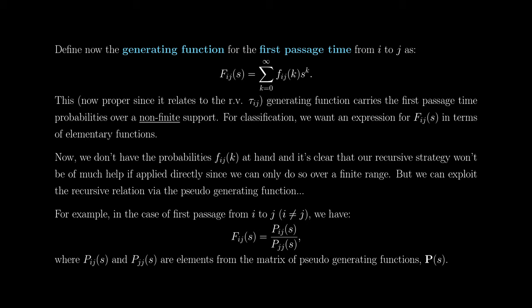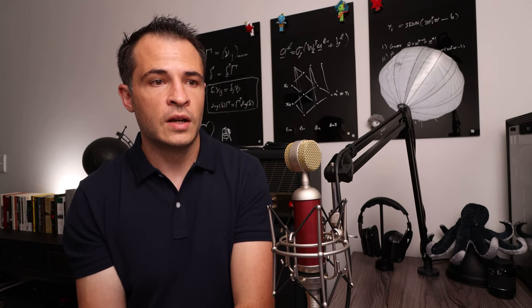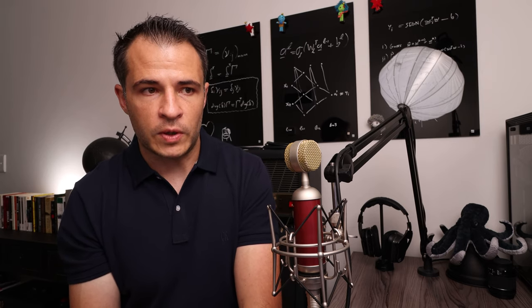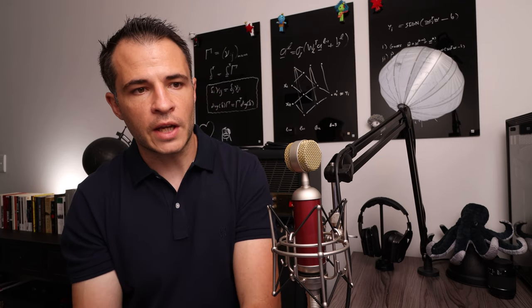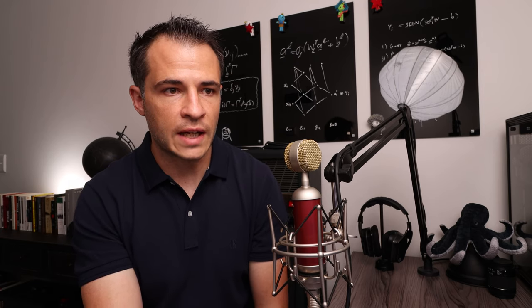In the case of first passage from state i to state j, where i ≠ j, we have that F_ij(s) = P_ij(s) / P_jj(s), where P_ij(s) and P_jj(s) are just the elements read off from the matrix of pseudo-generating functions. We have an exact expression for that matrix, so we can read off those elements and plug them in to obtain an analytical expression for the generating function F_ij(s). We now need to prove this relationship.